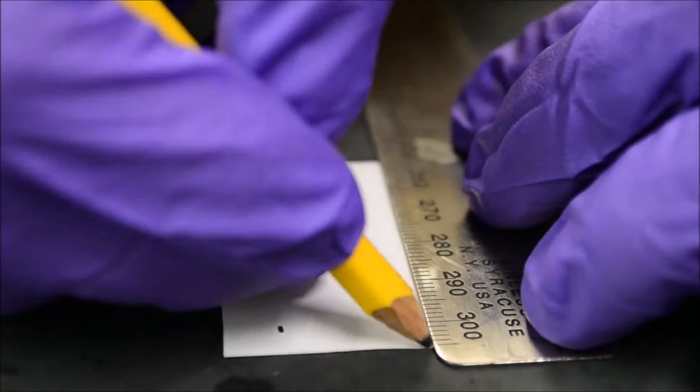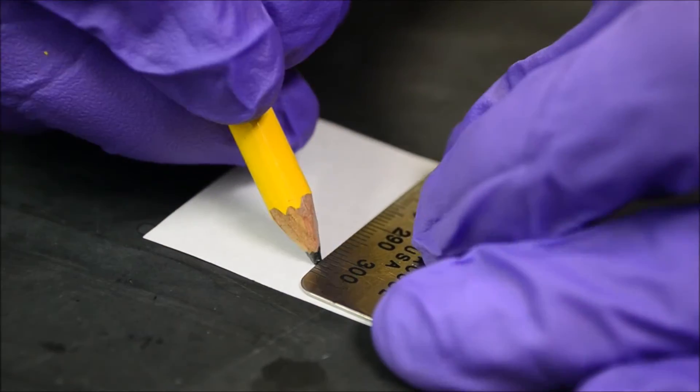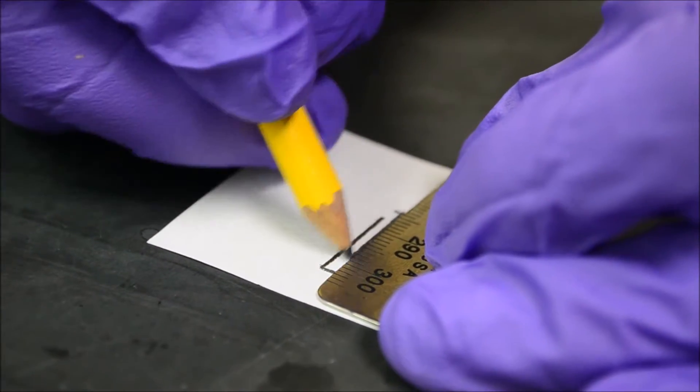The electrodes were fabricated by pencil traces on office paper, thereby reducing production cost and time. We used interdigitated electrodes to increase the active surface area of the electrode and decrease the electronic path length.